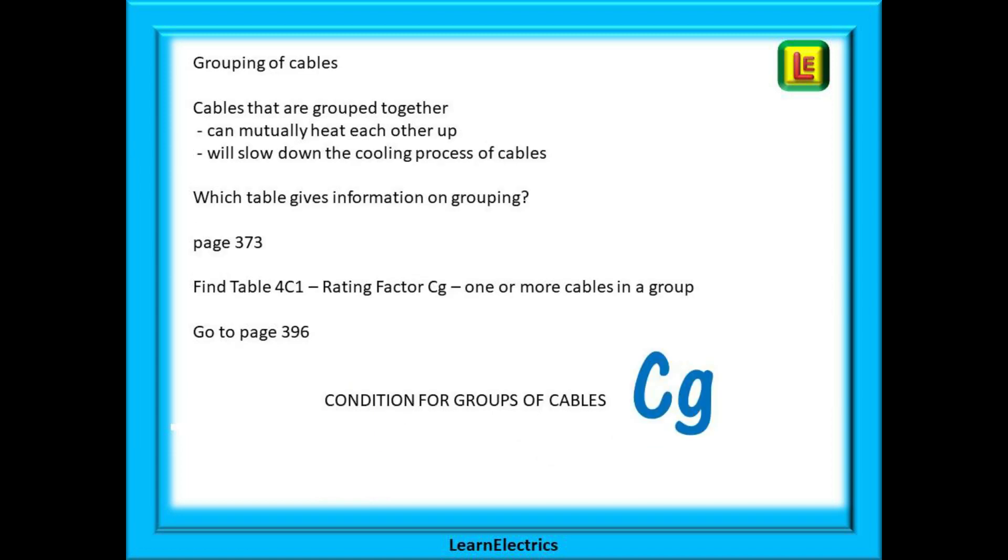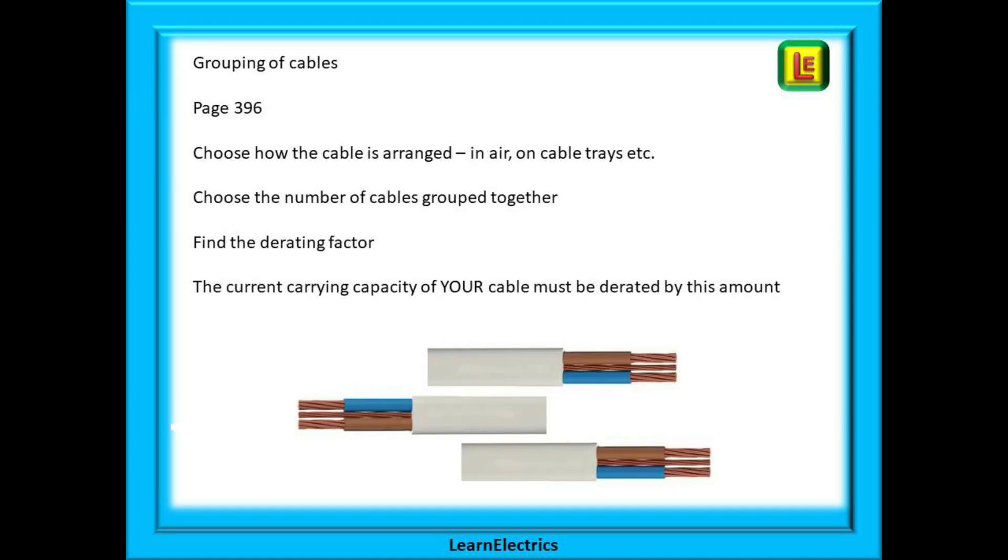Let's look at cable grouping now. We can keep it simple and have just one condition affecting our cable again. Cables that are grouped together can mutually heat each other up and they can also slow down the cooling process of other cables. Which table gives information on grouping? Find page 373 then find table 4C1 rating factor CG for one or more cables in a group. And we will find this table on page 396.